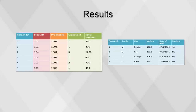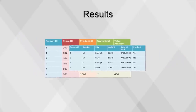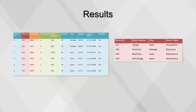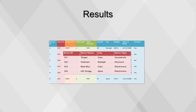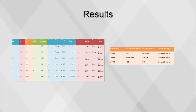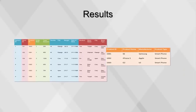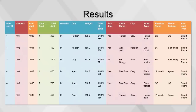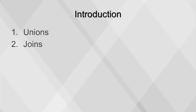First, we will join transaction fact with person dimension. Next, we will join the results from the previous join with store dimension. Finally, we will join our results from the previous join with product dimension. Notice how each step creates a progressively larger table. This concludes our video on unions and joins.